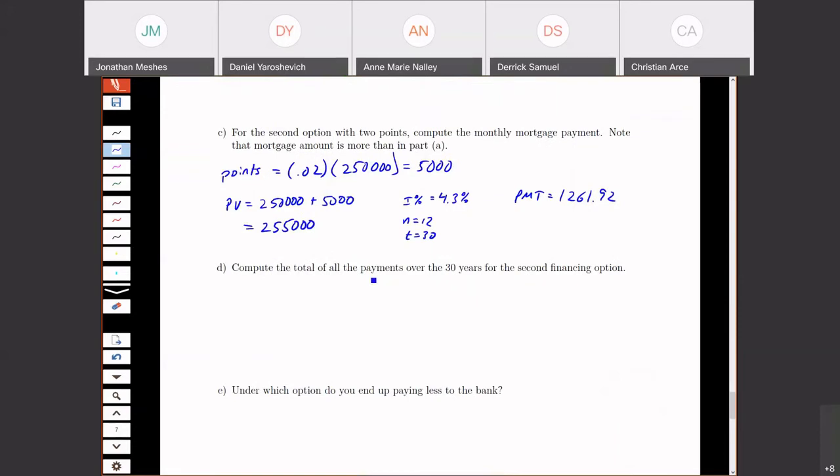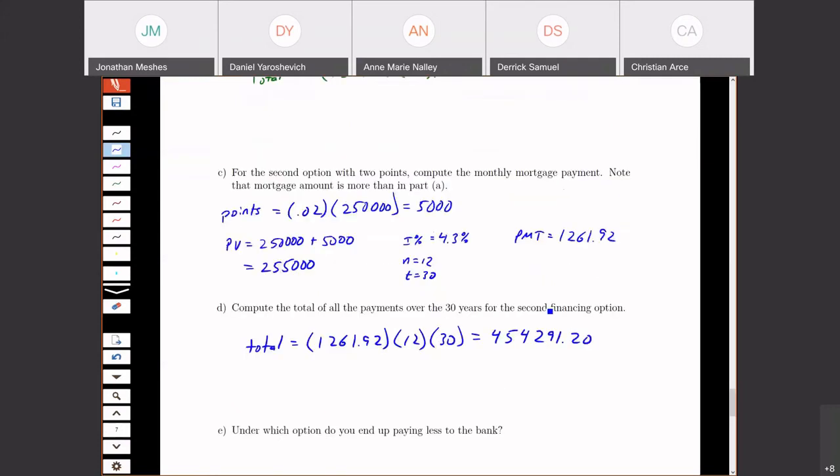Now compute the total of all the payments for 30 years for the second financing option. Here the total, we're paying $1,261.92, 12 times a year for 30 years. So we end up with $454,291.20.